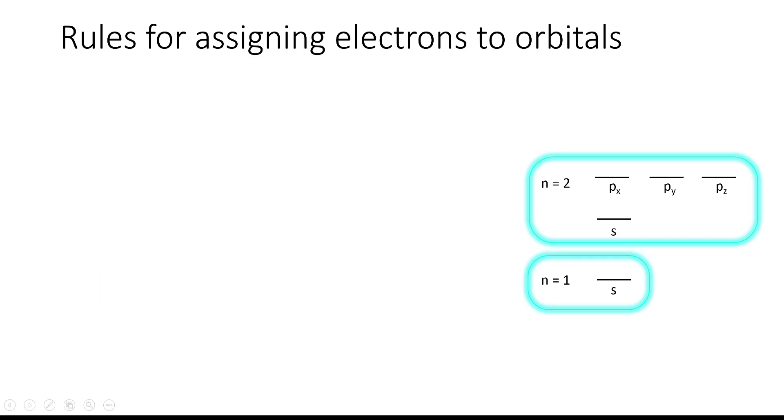Now we have to assign the electrons to these orbitals. And before we do that, let's look at the principles and rules that will guide us through this process. The first is the Aufbau principle, and it tells us that the orbitals are filled in the order of increasing energy, so going from the 1s to the 2s to the 2p and so on and so forth.